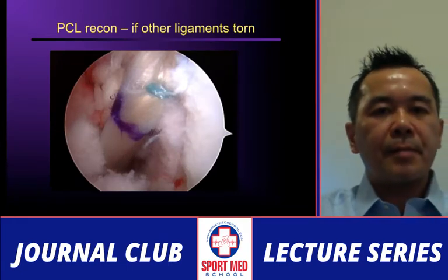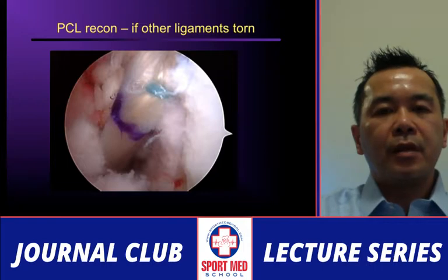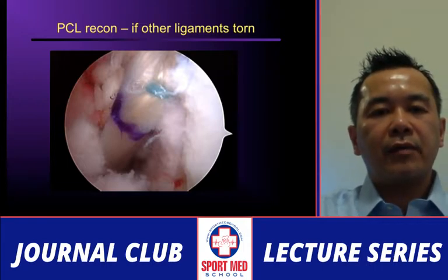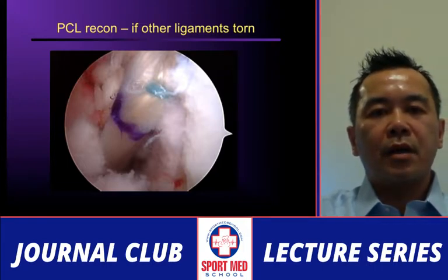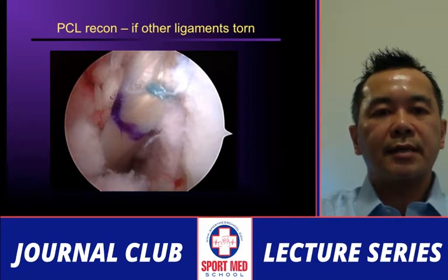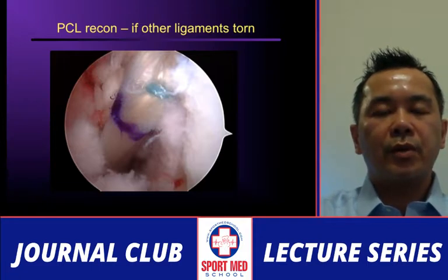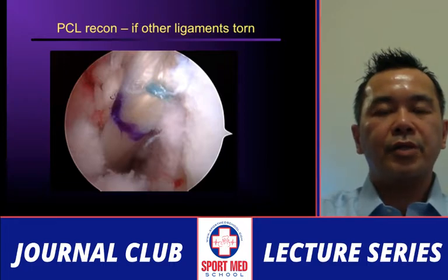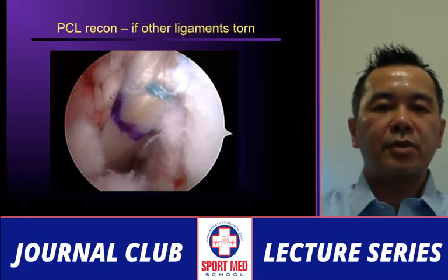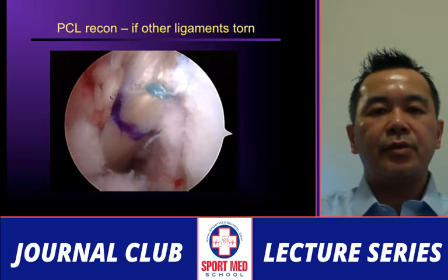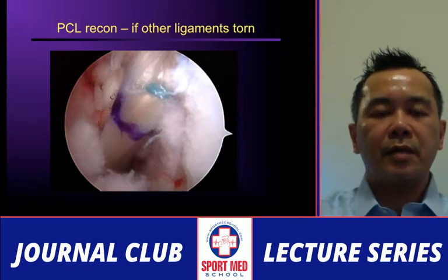For PCL reconstruction, in my practice, grade 1, 2, or 3 on the posterior drawer test is usually non-surgical if it's an isolated PCL injury. If you have combined ACL-PCL injury, reconstruct both to stabilize the knee. If you have PCL plus posterolateral corner injury, reconstruct both. This applies to any PCL injury combined with one other ligament.